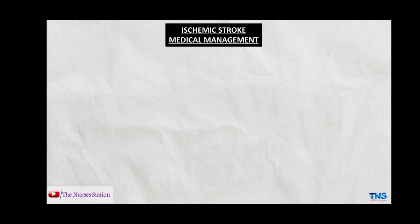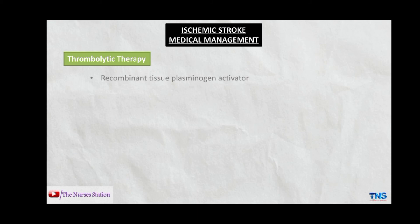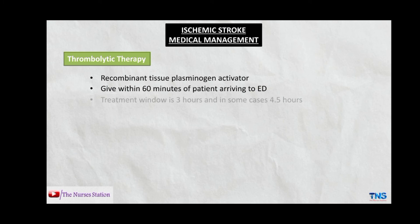The medical management of ischemic stroke includes thrombolytic therapy — dissolving the clot — which is approved by the US FDA. It involves administration of recombinant tissue plasminogen activator (tPA), which should be given within 60 minutes of the patient arriving at the emergency department. The treatment window is three hours, extendable to 4.5 hours in some cases. When a clot forms, plasminogen gets trapped within it; tPA converts plasminogen into plasmin, which breaks fibrin into soluble products, causing breakdown of the clot.